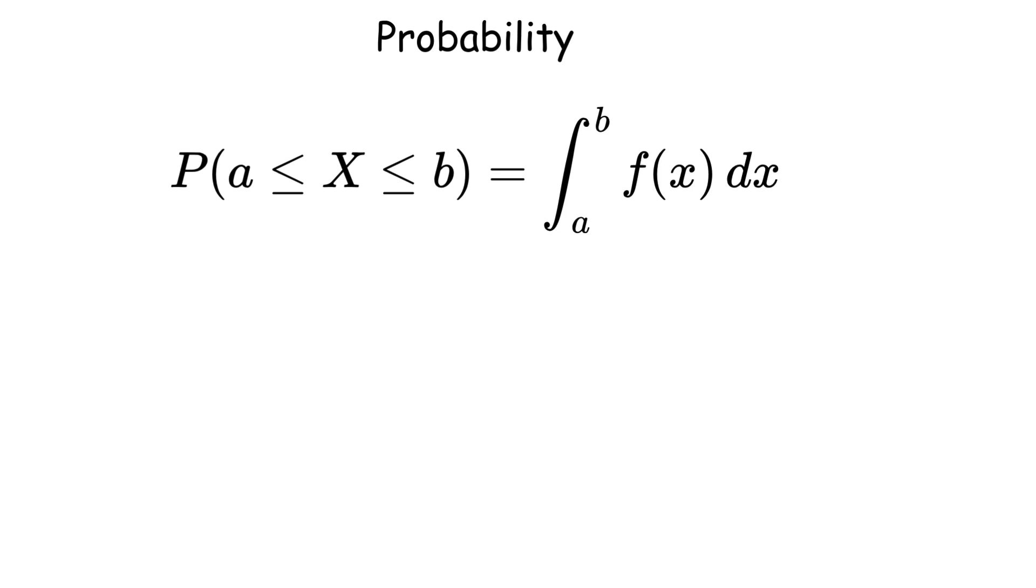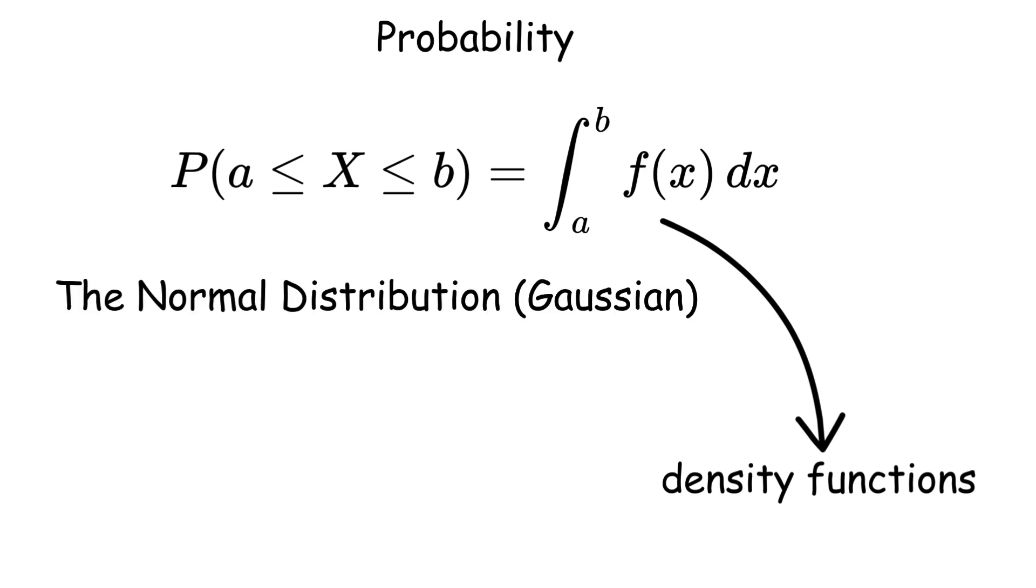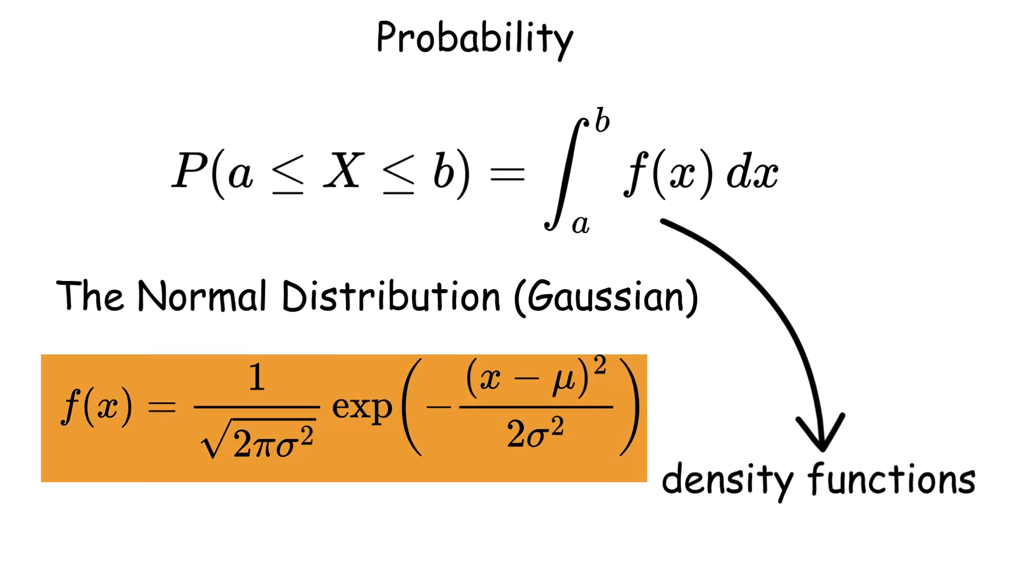For continuous random variables, we use probability density functions, written as f of x, where the probability of an interval is the integral. The most important distribution is the normal distribution, with density function written as.